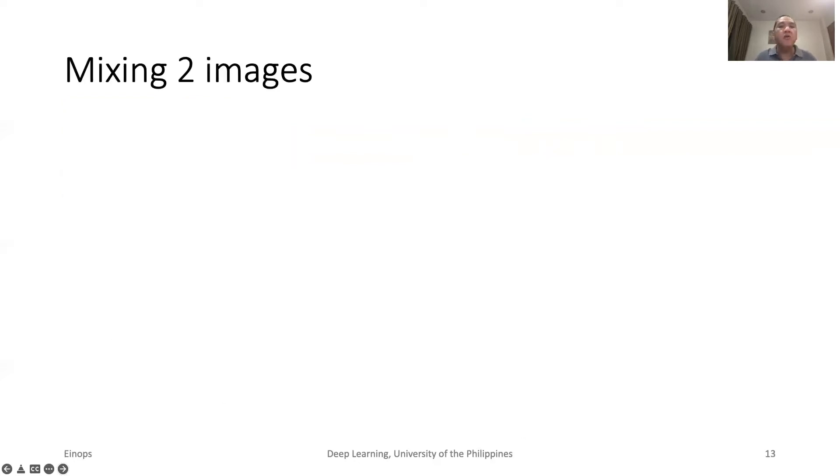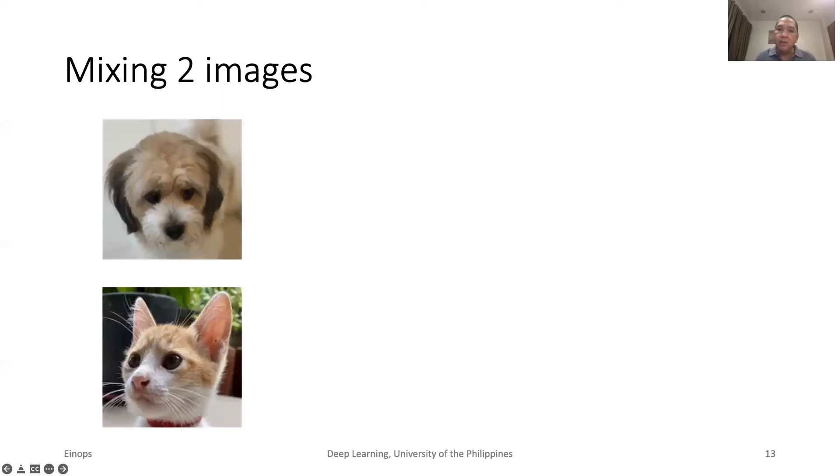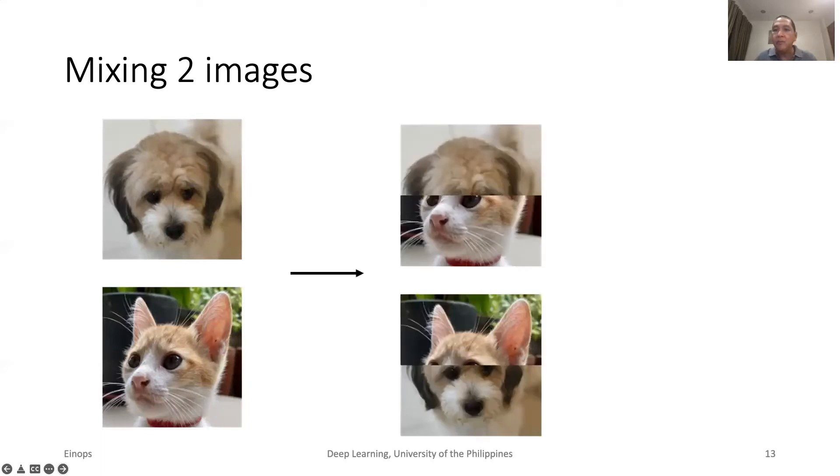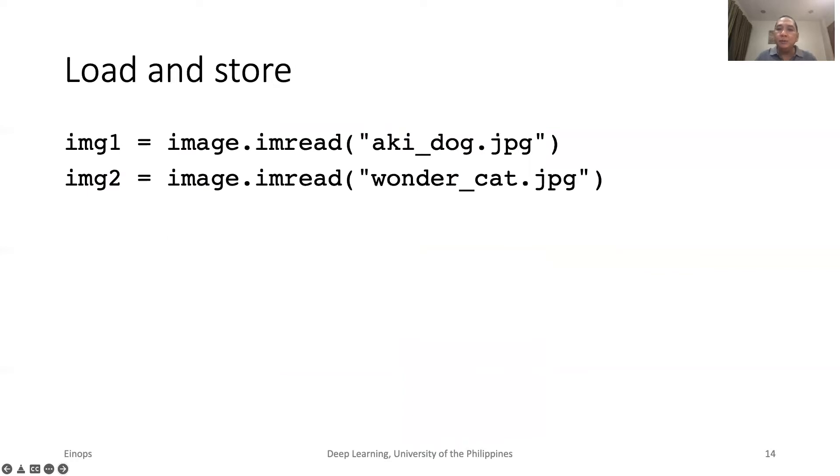The next example is more challenging. In this case, we have two images. An image of a dog and an image of a cat. We want to synthesize new images such that each image is a mix of input images. For example, in the first new image, the upper half is a dog while the lower half is a cat. This type of image synthesis is done in data augmentation, a regularization technique to improve model generalization.